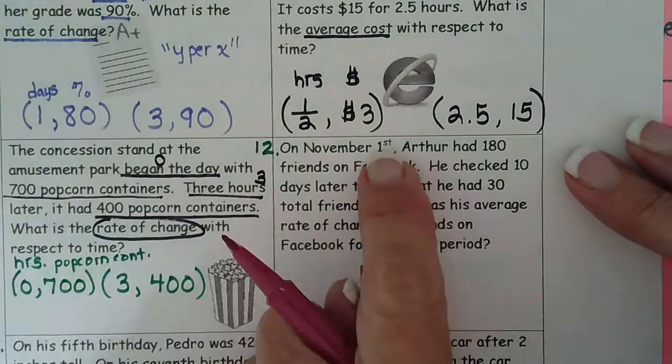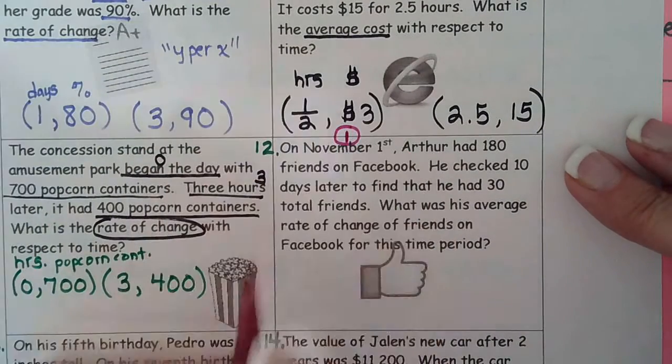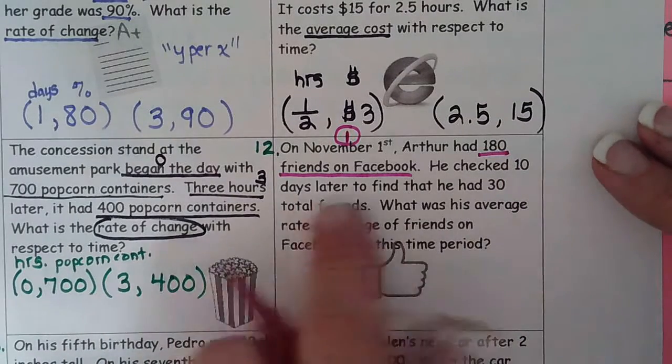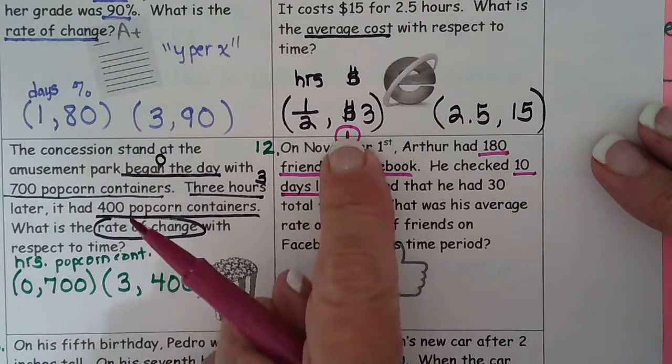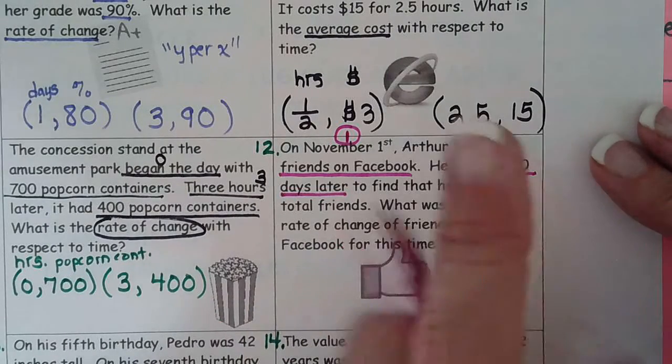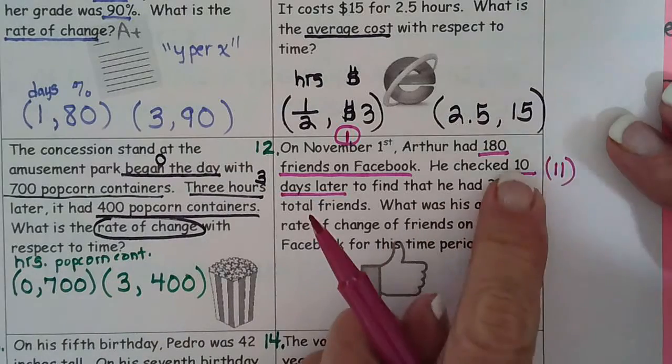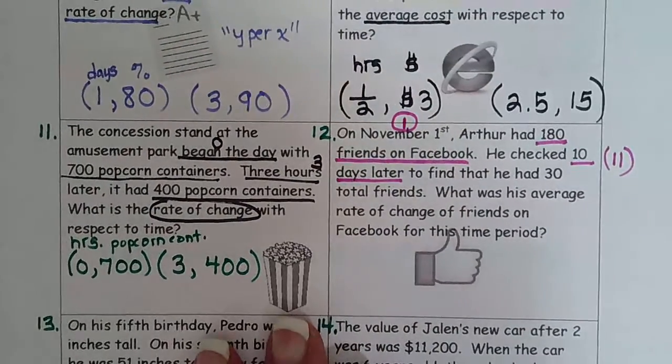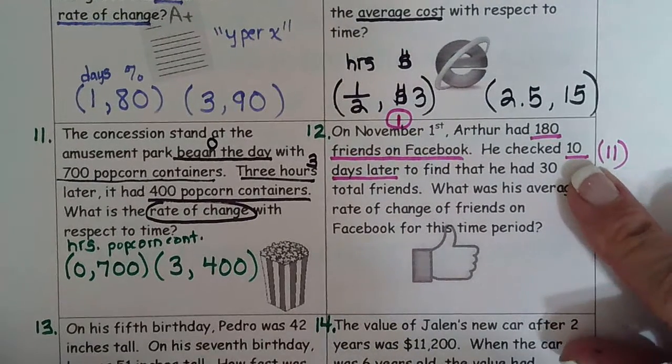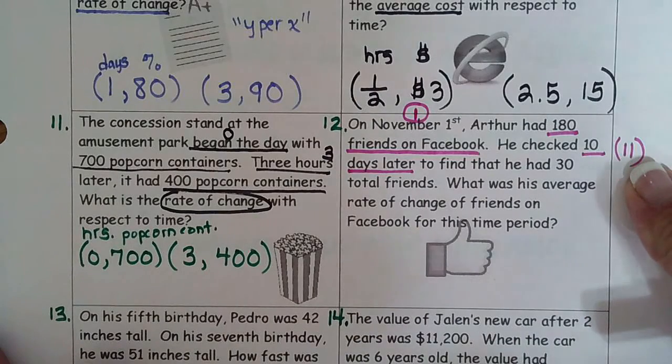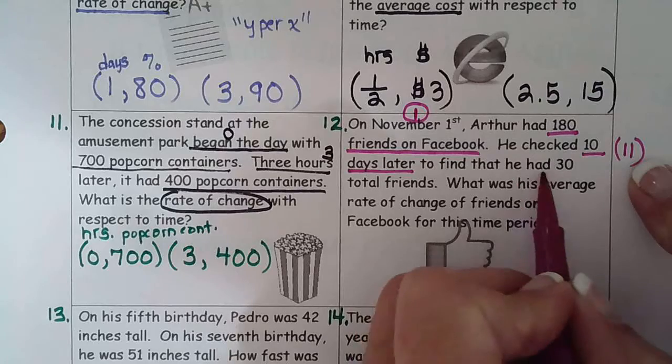So number 12. On November 1st, so we could call this 1, right? Arthur had 180 friends on Facebook. He checked 10 days later. So if this is 1, what would this have to be? 10 days later. 1 plus 10 is 11. A lot of students do that wrong the first time they put 10. But if you're going to call November 1st 1, 10 is only 9 days later. So you have to add 10, which means the second x is going to be 11. But because dates, time, are always the x.